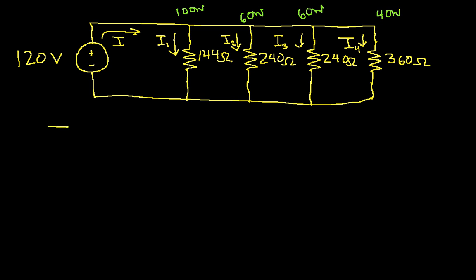I want to find out what the total current is. So I can write down KCL which says that the current flowing into the node is equal to I1 plus I2 plus I3 plus I4, the currents flowing out of the node.